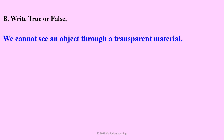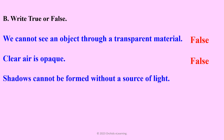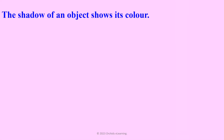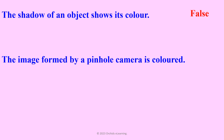Write true or false: We cannot see an object through a transparent material — False. Clear air is opaque — False. Shadows cannot be formed without a source of light — True. The shadow of an object shows its color — False. The image formed by a pinhole camera is colored — True.